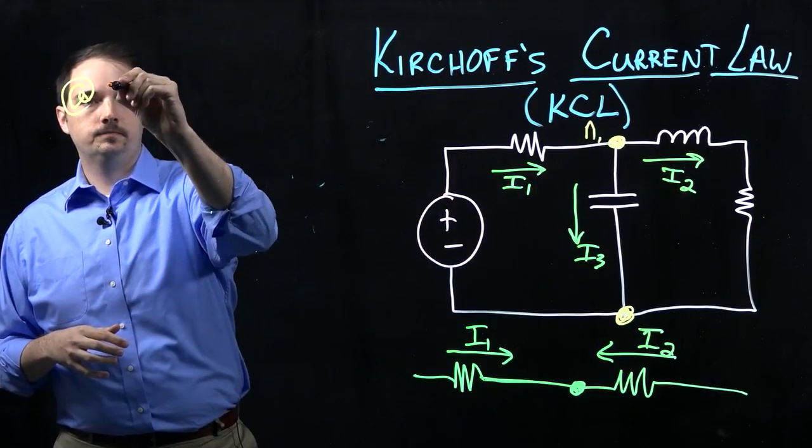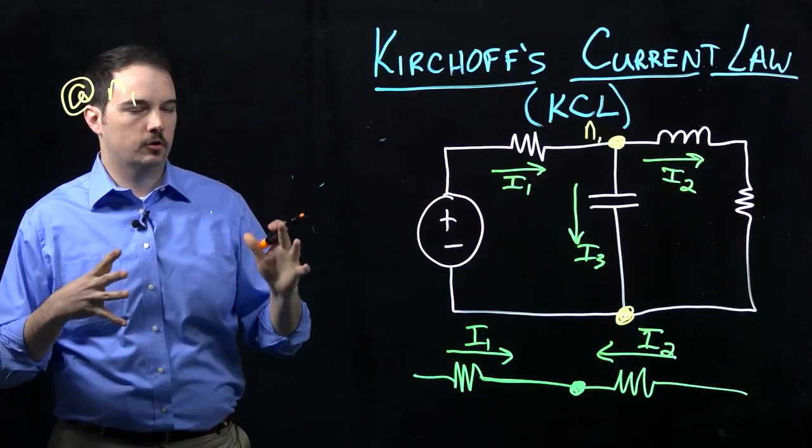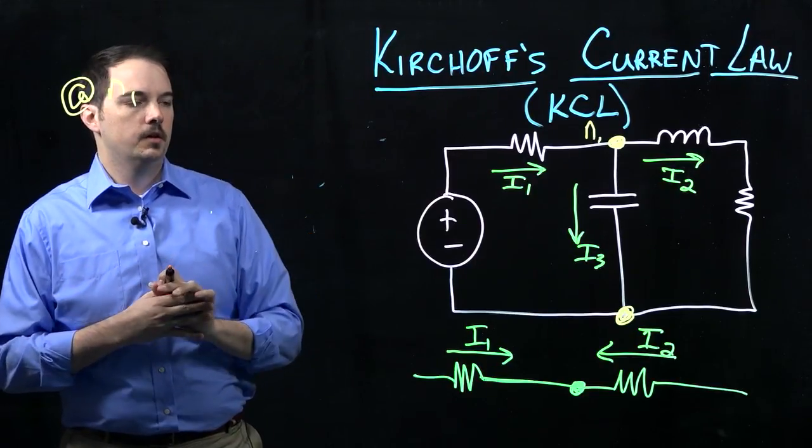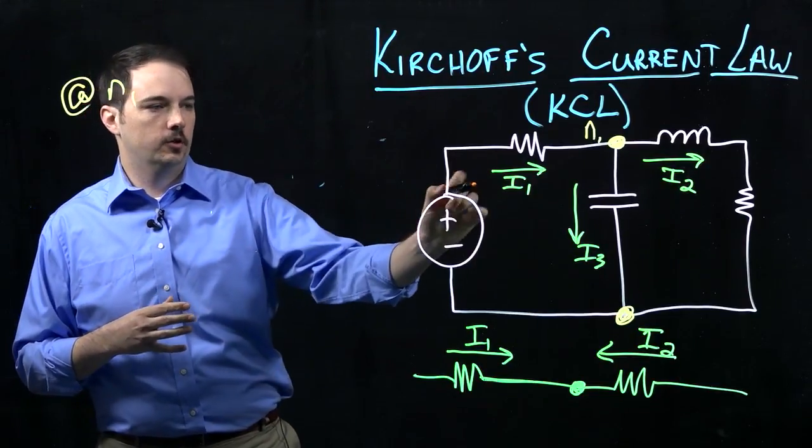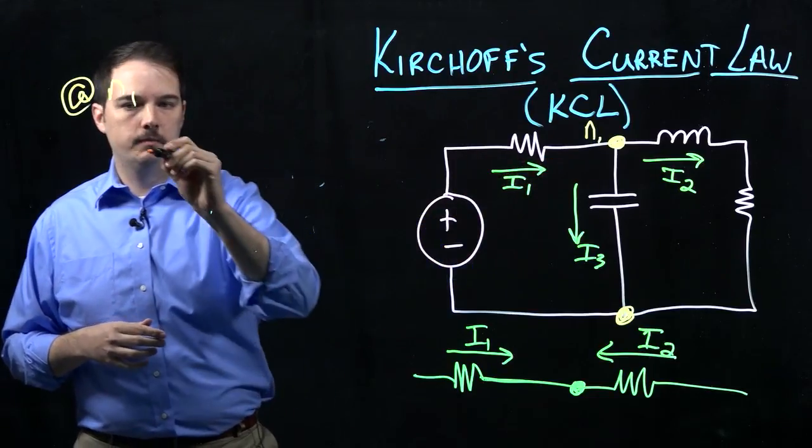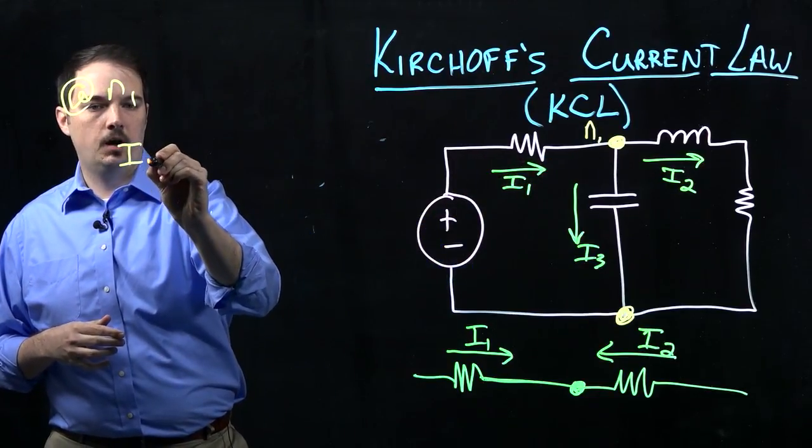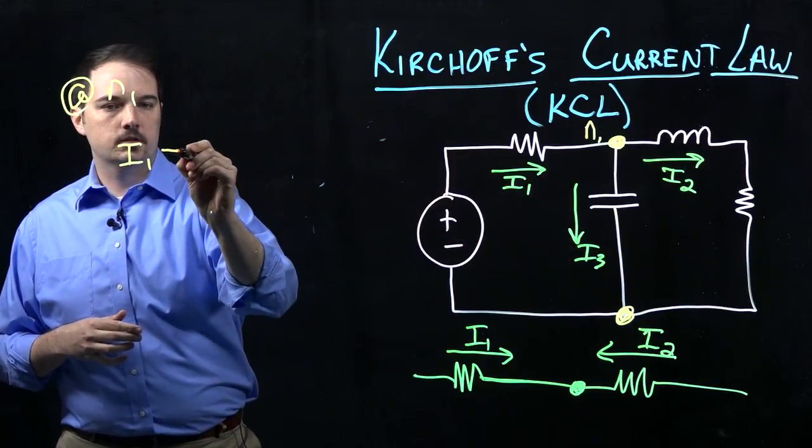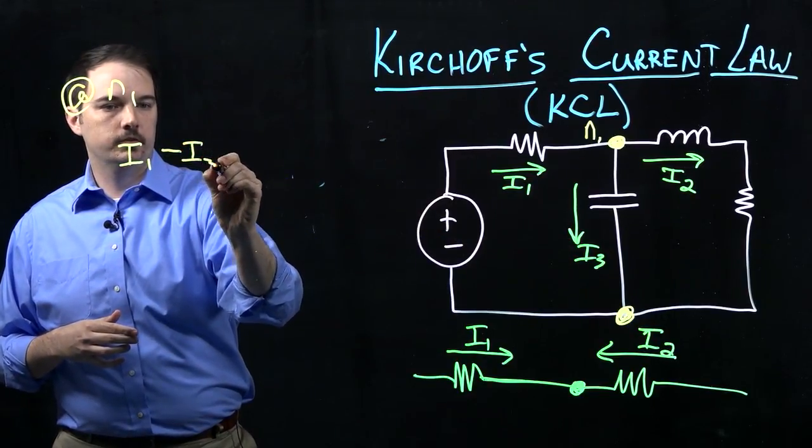So at N1, to write a Kirchhoff current law equation to describe the various current flows here, let's say we have I1 coming into the node, so that'll be a positive quantity. We have I3 coming out, so that's going to be a negative quantity, leaving that node.